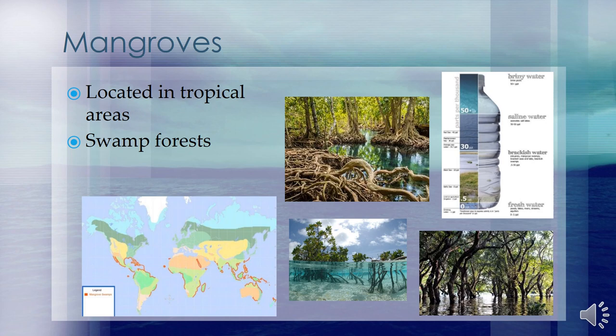Mangrove swamps are tidal swamps which are dominated by mangroves. Mangroves are shrubs or small trees with numerous tangled roots that grow above the ground. Mangrove trees are salt tolerant — they contain a complex salt filtration system and a complex root system to cope with being immersed in salt water. Mangrove swamps are found along coastlines in tropical areas between 30 degrees north and 30 degrees south of the equator.